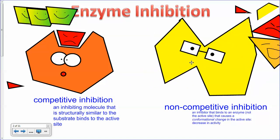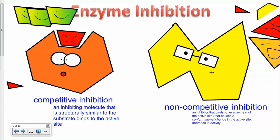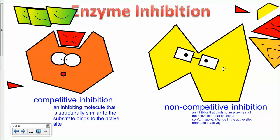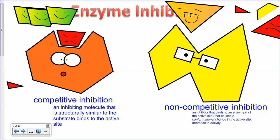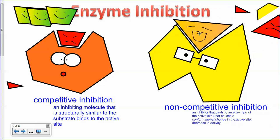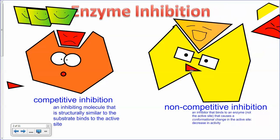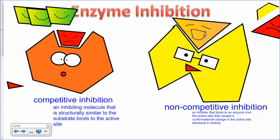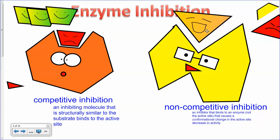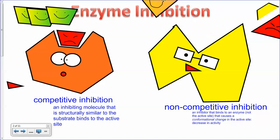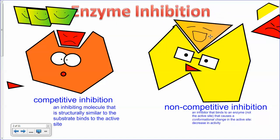In non-competitive inhibition, here's another enzyme. Here's its active site. Here's the regular substrate that's supposed to come in and when it binds, it goes and does its job, gets converted to its products and leaves, and another one comes in, and so on so forth.